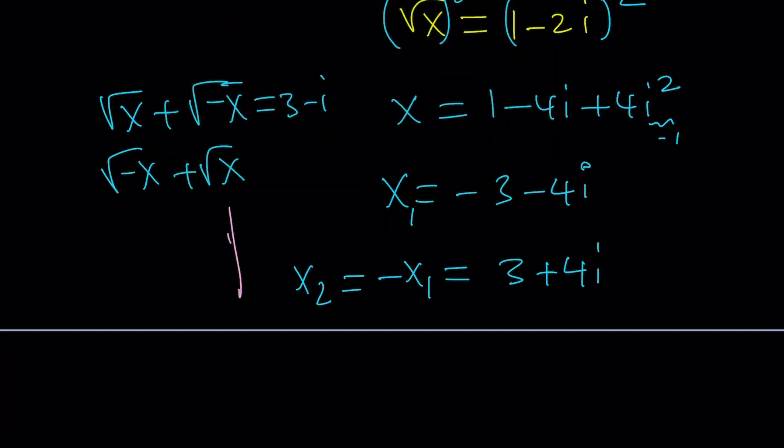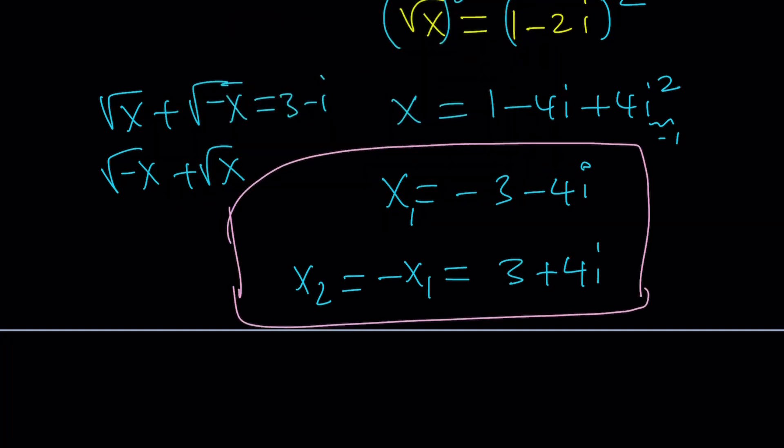In other words, this equation has two solutions and they're opposites: 3 plus 4i. You can check this by finding the square root of 3 plus 4i, then finding the square root of negative 3 minus 4i, and adding them together — you should be getting 3 minus i.